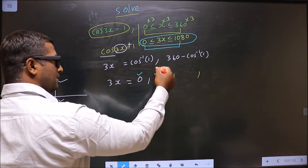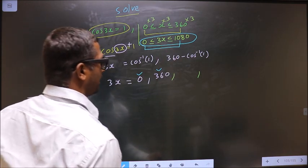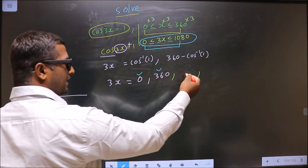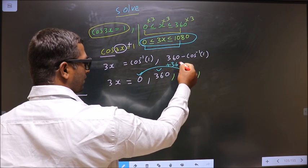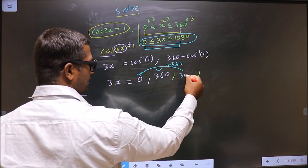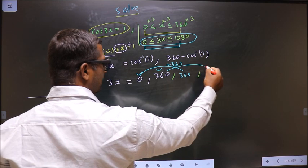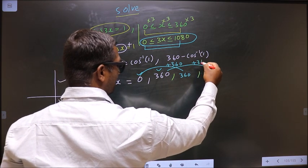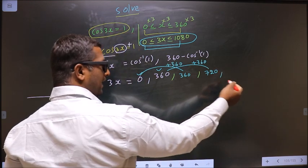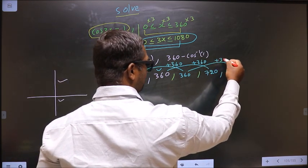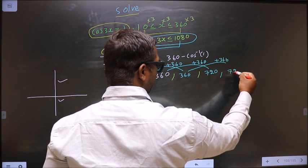So here this lie in this interval. This also lie in this interval. To get another angle you add 360 to this. So I get 360. To get another angle add 360 to this. So I get 720. To get another angle you add 360 to this. I get 720.